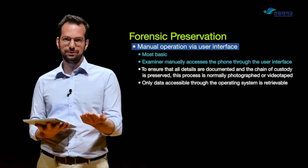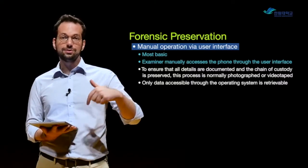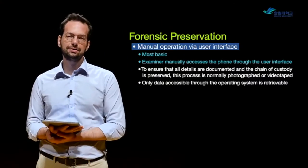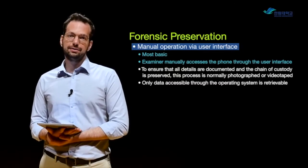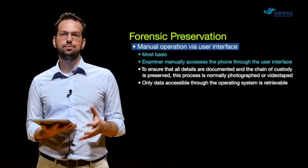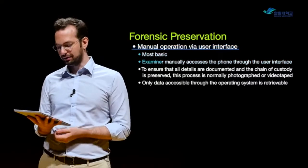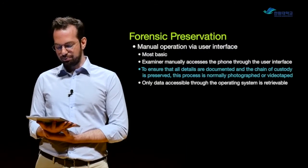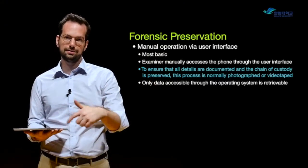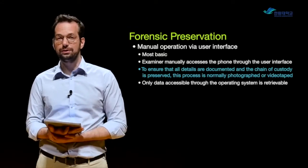For example, if you want to know who's in the contacts list, you unlock the phone and scroll through the contacts taking pictures. This is the least forensically sound because you are modifying data on the phone - you are accessing it directly - but sometimes that's the only way we can get access to data. This kind of manual operation of the user interface can produce valid results, but your documentation has to be very good and you have to justify why you're interacting with the phone directly. To ensure all details are documented and chain of custody is preserved, this process is normally photographed or videotaped, using a camera that hangs over the phone and records everything.